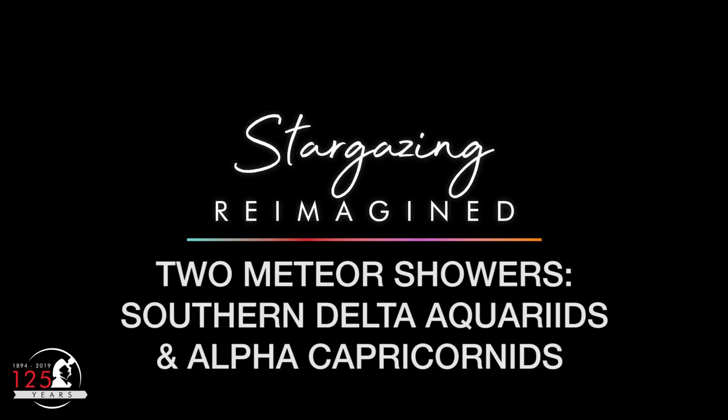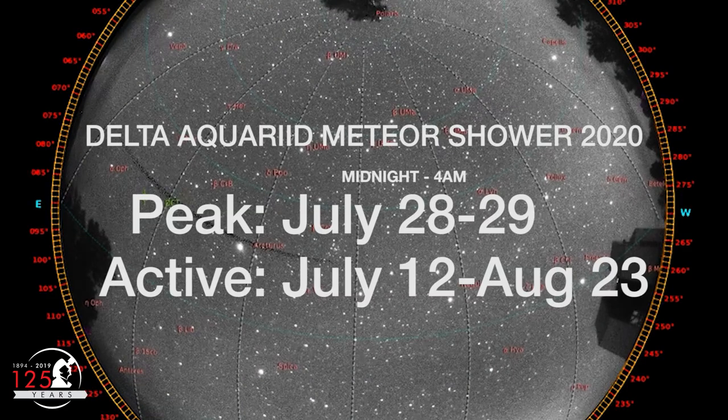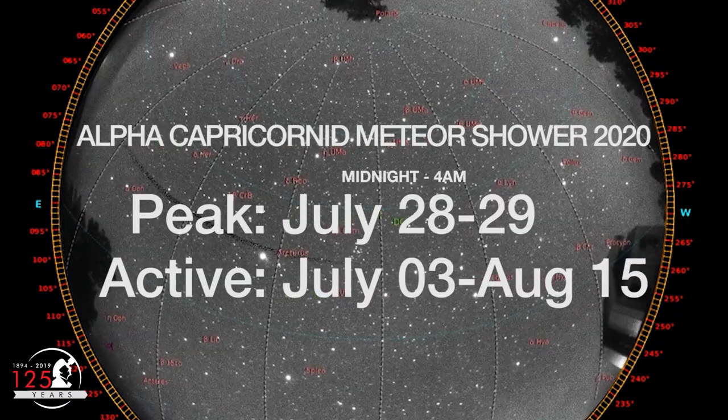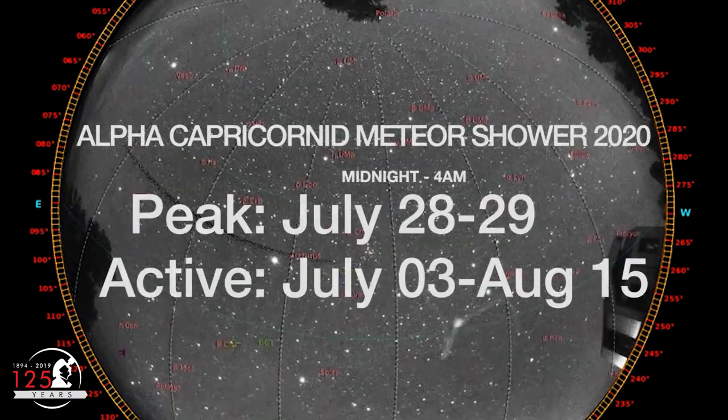Every year in late July, the Earth passes through the debris left by two comets. One that creates the Southern Delta Aquarian meteor shower, and one that creates the Alpha Capricorn meteor shower.